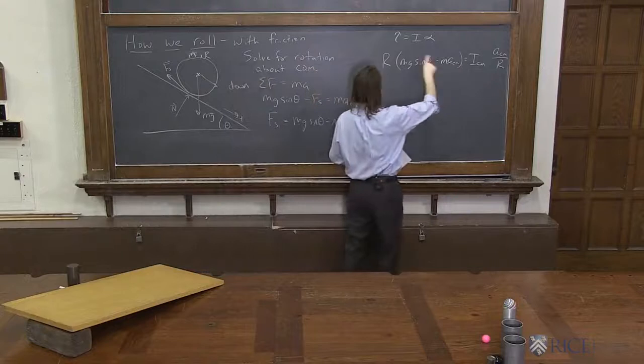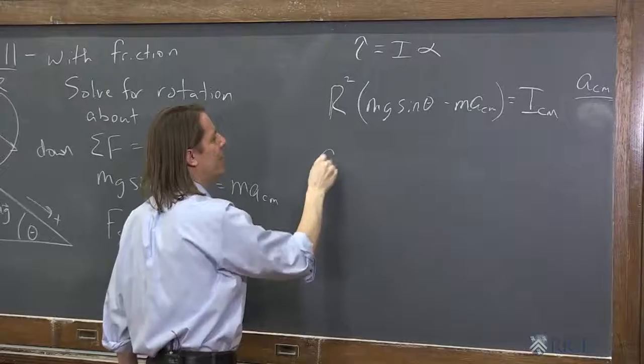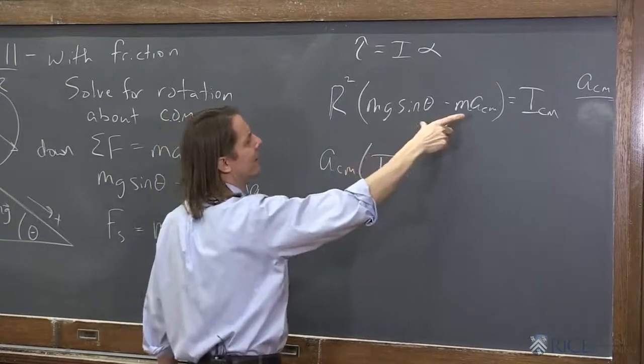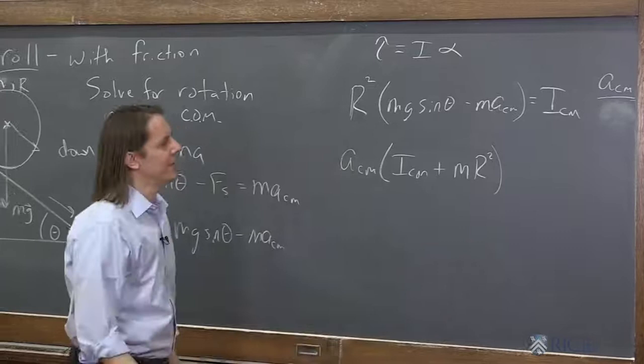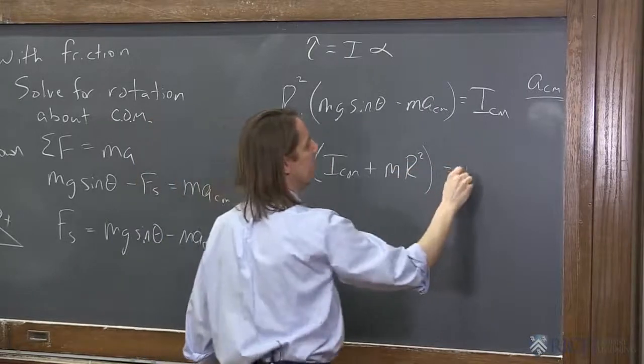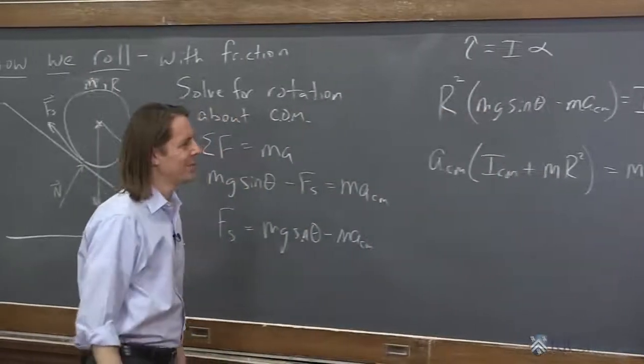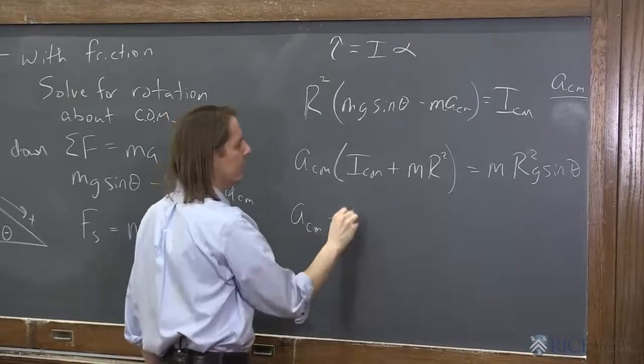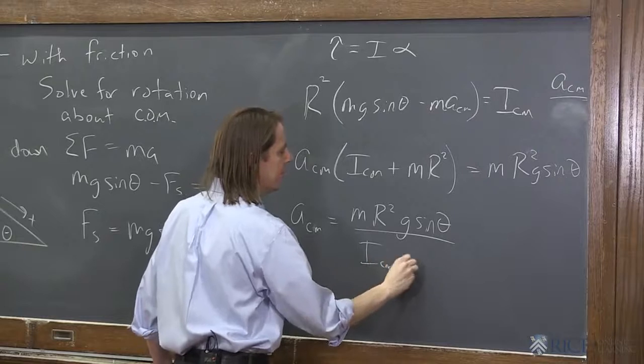And we could solve for a_cm by just saying, all right, so here you've got I_cm, and then this term would be plus mr^2 times the center of mass. There we go. That's that side. And then the other side, what was left? mr^2 g sin theta. This may not be the most efficient algebraic way to get this answer. And then we bring this underneath. And we see the acceleration of the center of mass equals mr^2 g sin theta over the moment of the center of mass plus mr^2.